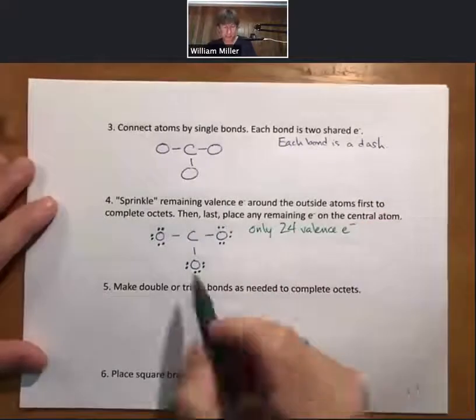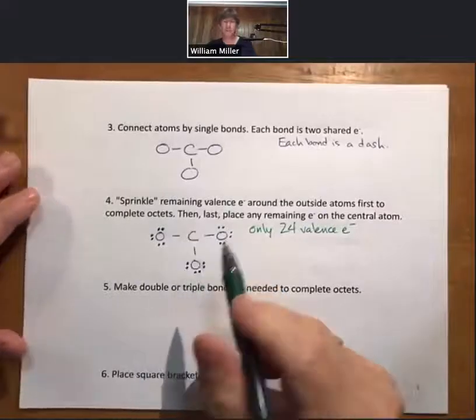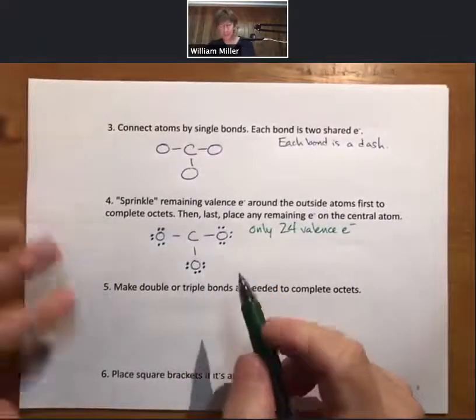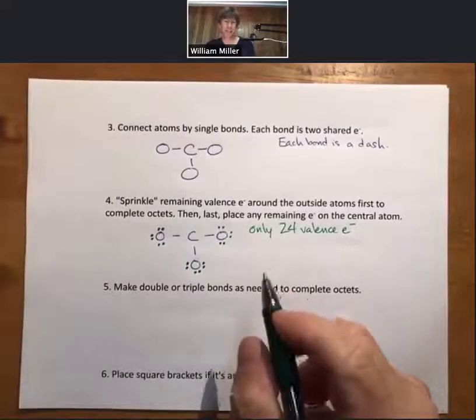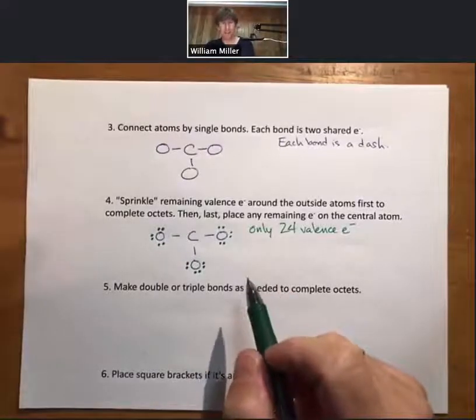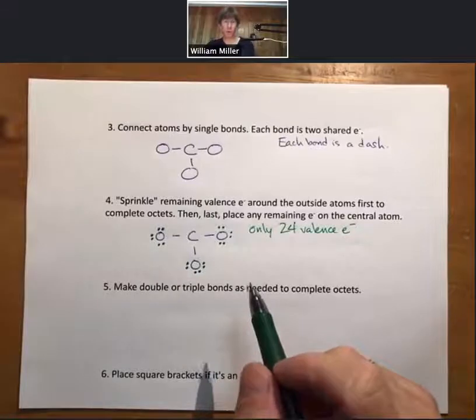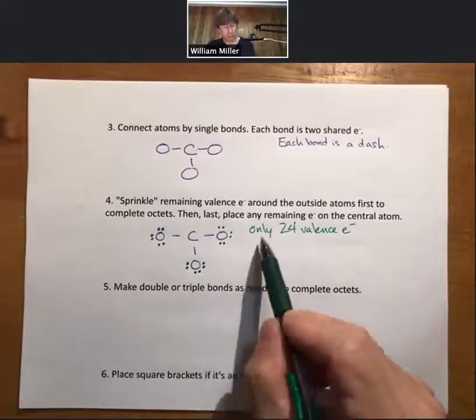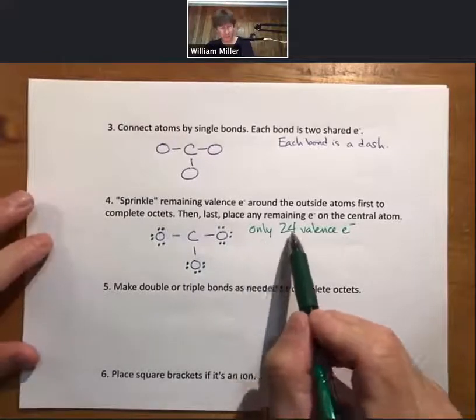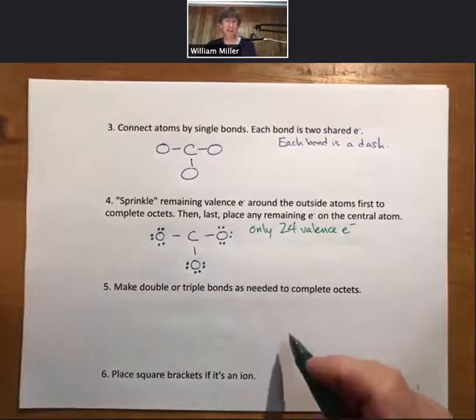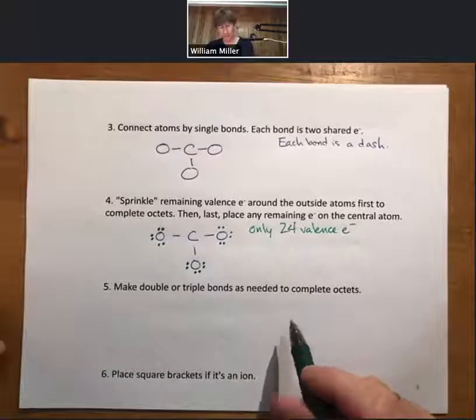And what we can see is that carbon, the center atom, does not have an octet. That's okay. We have more steps here. We do want everybody to have an octet by the end because the octet rule rules. However, another thing that is very important is that you only use the same number of valence electrons that you have available.